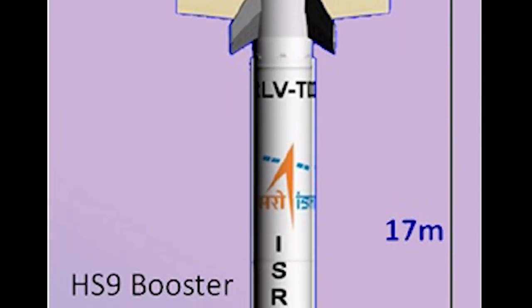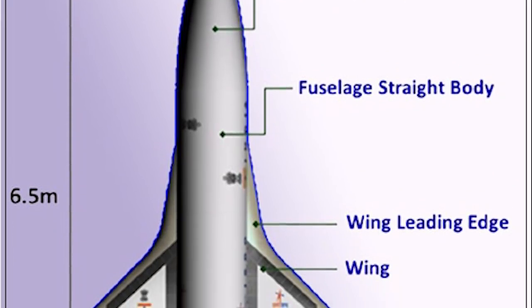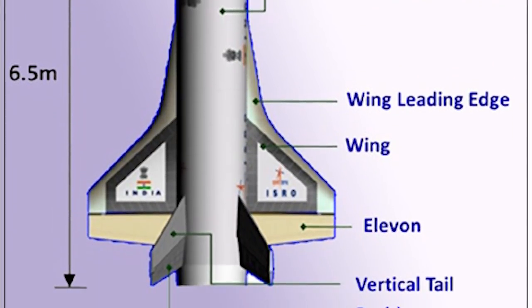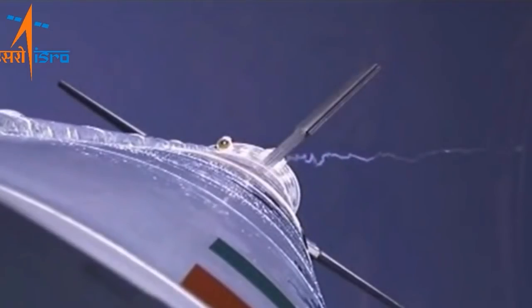RLVTD, Reusable Launch Vehicle Technology Demonstrator Project, is the first step towards realizing a two-stage to orbit reusable launch vehicle. It will act as a flying testbed to evaluate technologies like autonomous landing using air breathing propulsion, powered cruise flight and hypersonic flight.